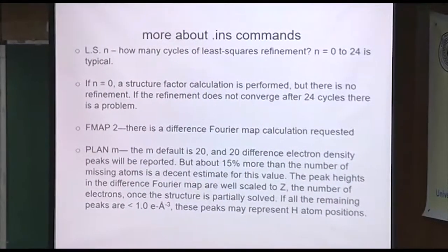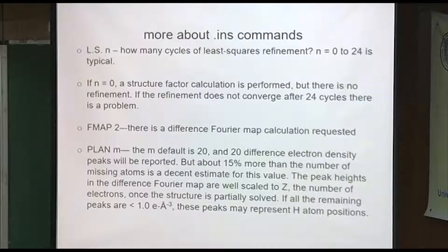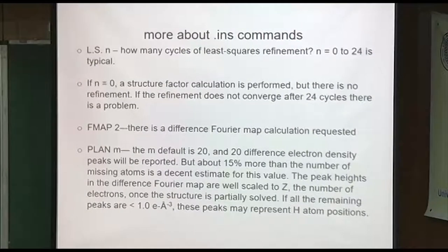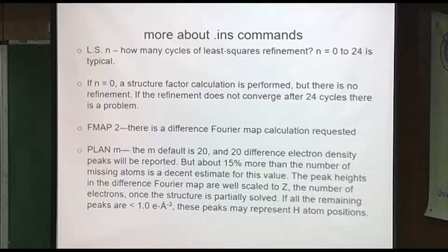A little more about commands: there's the L.S. command, which stands for least squares. N is how many cycles of least squares you want to do. With today's fast computers you can really do 12 or 24. We used to say if it doesn't converge in four cycles then something's wrong, but actually sometimes it does take 24 cycles to converge. You keep an eye on the shifts.